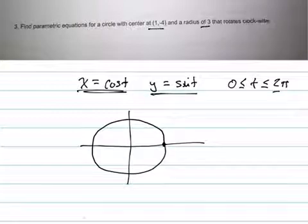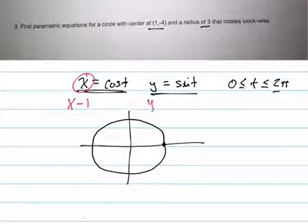Okay, so that's your basic parametric circle. But we don't want that. We want it to be centered at (1, -4). So what we have to do is change x to x minus 1, and y to y plus 4. That's the first thing.